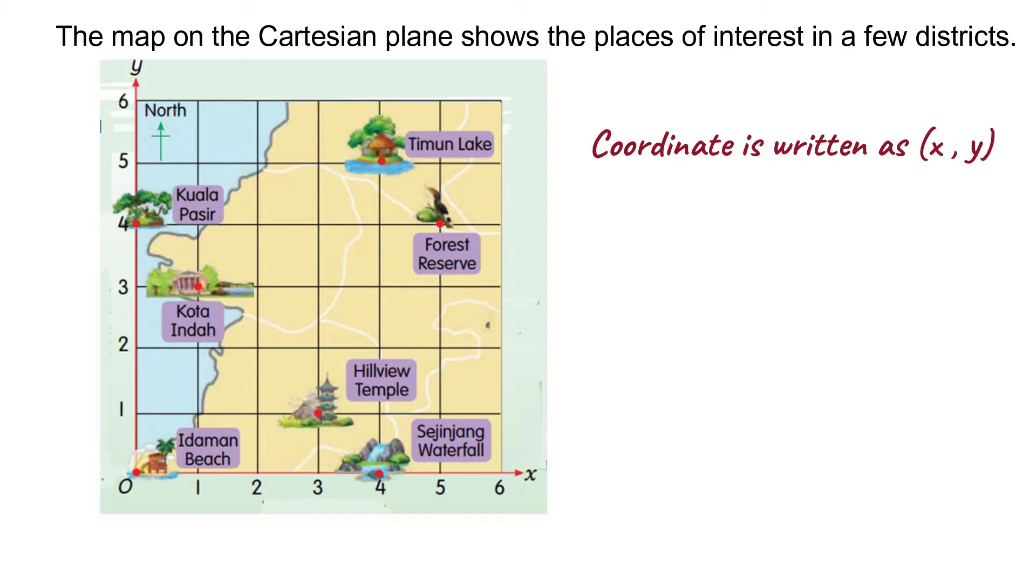Let's see how to write coordinates. The coordinates of Idaman beach which is at the origin is written as 0, 0.